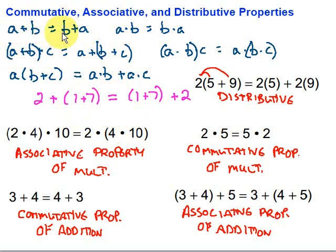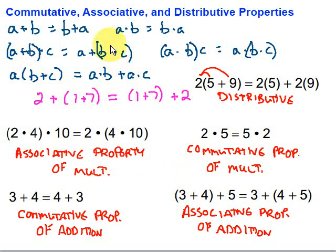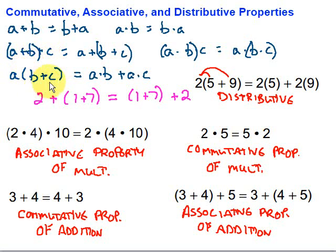The commutative property deals with order and moving — to commute is to move. The associative property deals with grouping symbols — if you associate, you hang out in a group. The distributive property allows us to get rid of parentheses by taking whatever's being multiplied on the outside and multiplying it by each piece on the inside. Remember that the associative and commutative properties apply only to addition and multiplication, because order doesn't matter there. They can't apply to subtraction or division — if we change the order there, we'd get a different answer. The distributive property has to do with something being multiplied by a quantity inside parentheses.